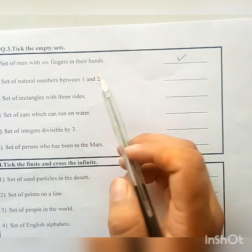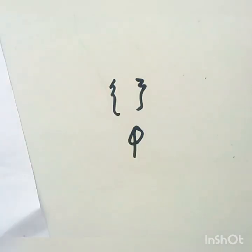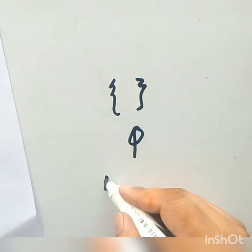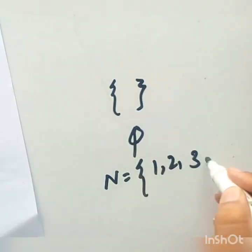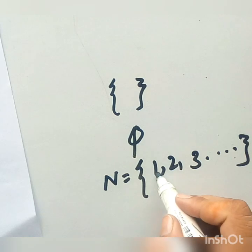Set of natural numbers between 1 and 2. Students, here natural numbers is written as set of natural numbers equals to 1, 2, 3 up to so on. So between 1 and 2, there is no number.